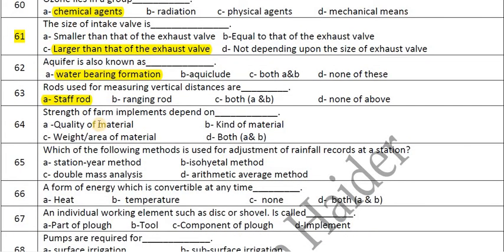The strength of farm implements depends on the quality of material and the kind of material — both a and b. The double mass analysis method is used for adjustment of rainfall records at a station.